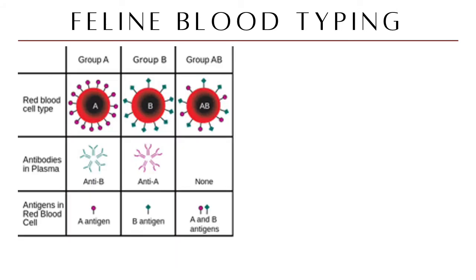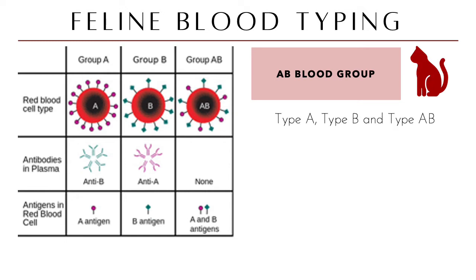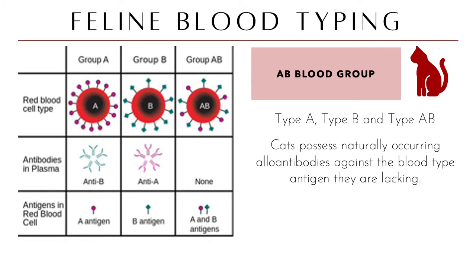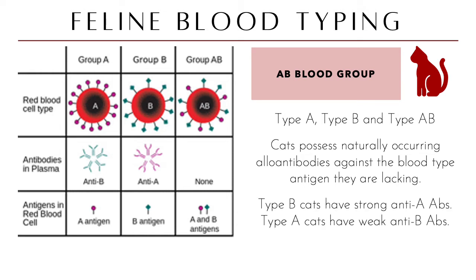In felines, the blood group system is the same as in humans — the AB group: type A, type B, and type AB. Most cats are type A. Cats possess naturally occurring alloantibodies against the blood type antigen they lack. Type B cats have strong anti-A antibodies; type A cats have weak anti-B antibodies. Most cats are type A, with type B being rare.